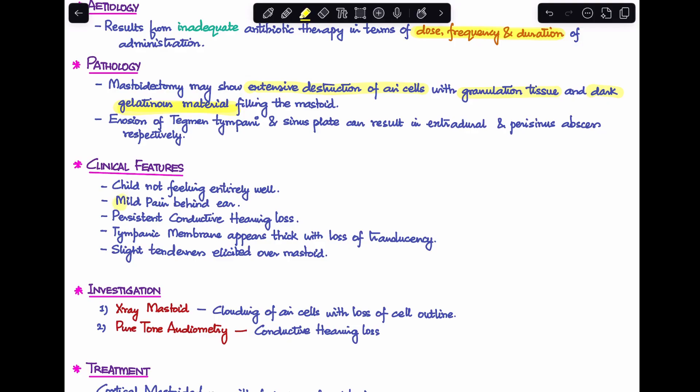Coming to clinical features, the child is not feeling well. There will be mild pain behind the ear. There will be persistent conductive hearing loss. Tympanic membrane may not have a perforation; it may appear thick with loss of translucency. Very slight tenderness can be elicited over mastoid. You can see how this is very different from all the acute signs and symptoms we were talking about in acute mastoiditis. The symptoms are actually very masked.